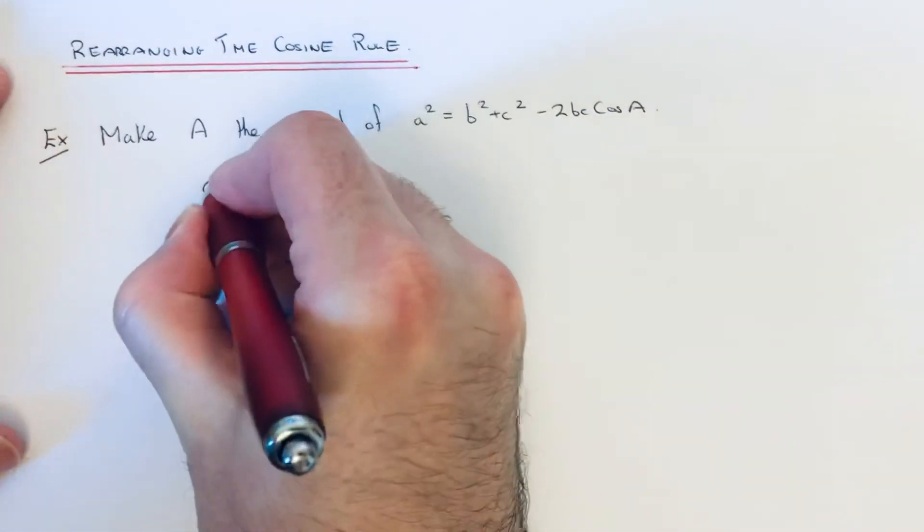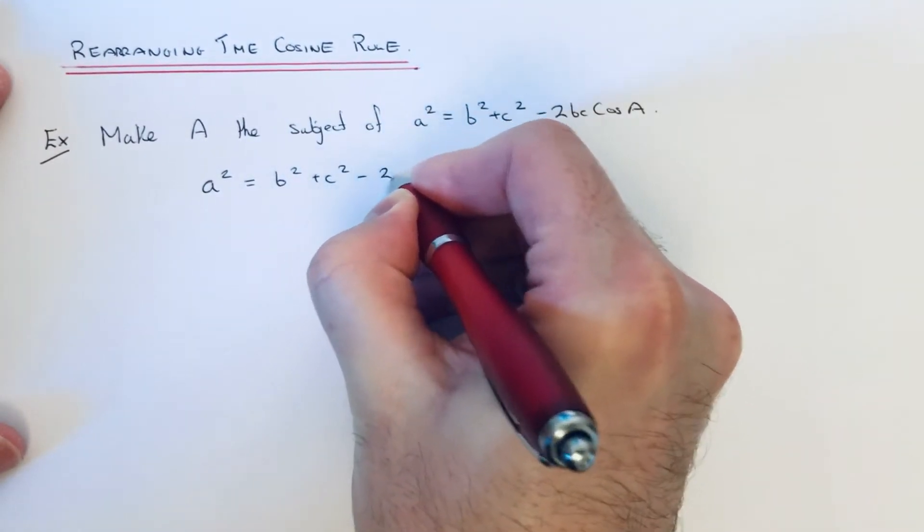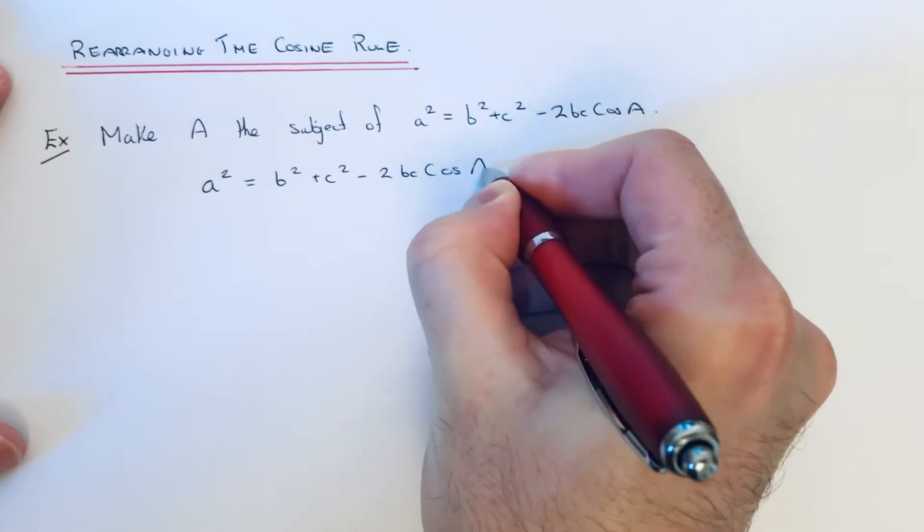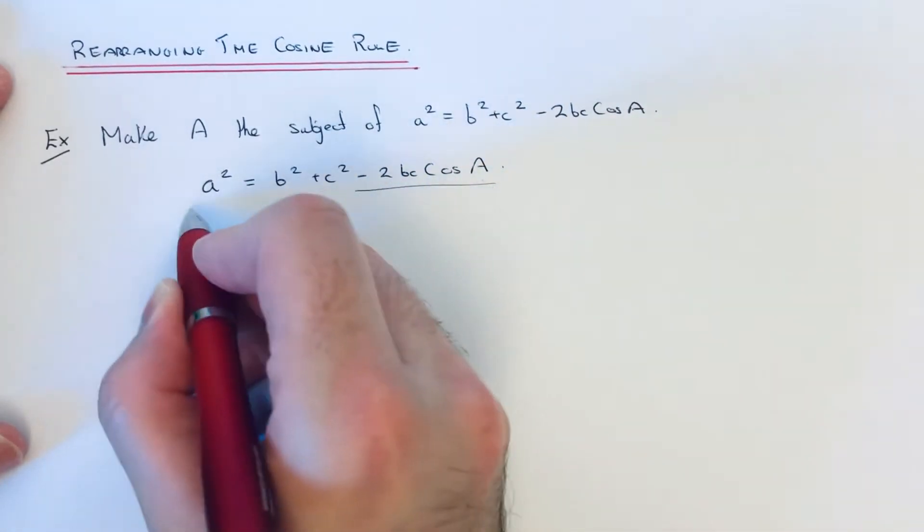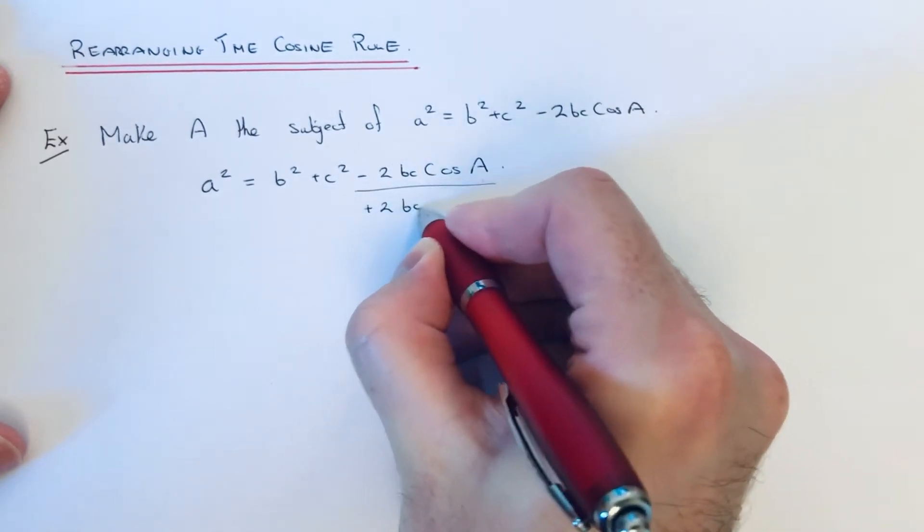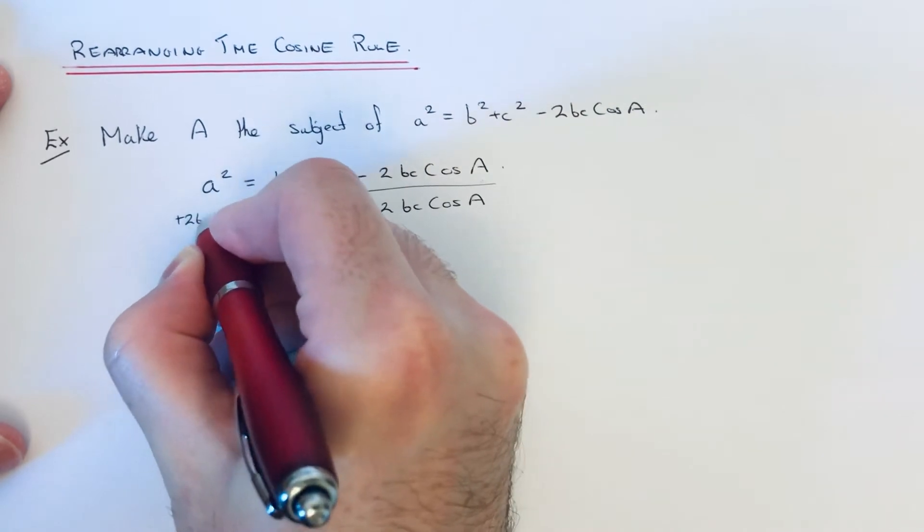So let me just write down the equation again. The first thing I'm going to do is move the minus 2bc cos A to the left-hand side. You can do that by adding 2bc cos A to both sides.